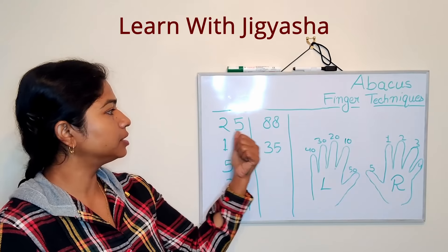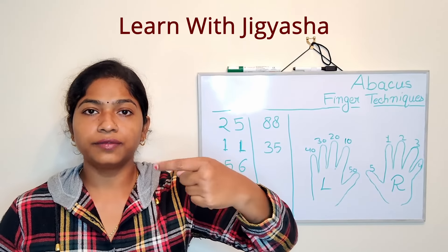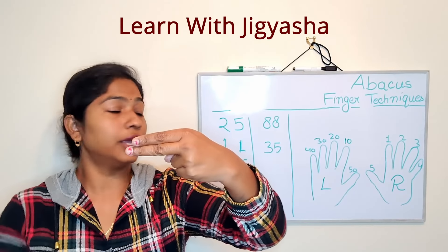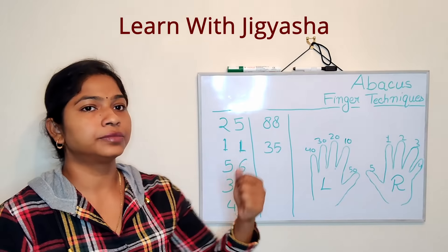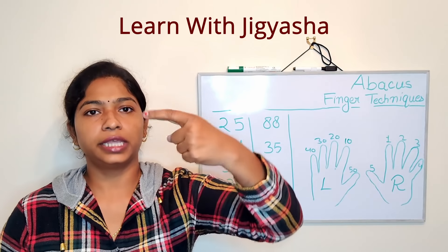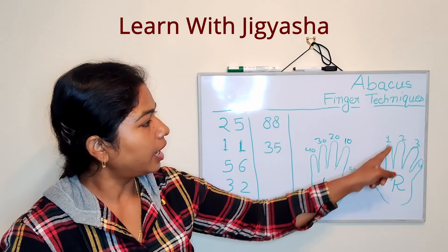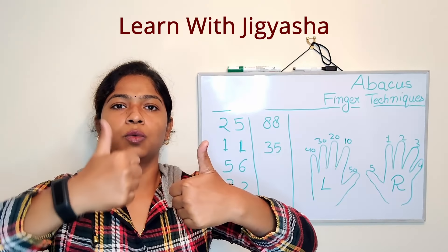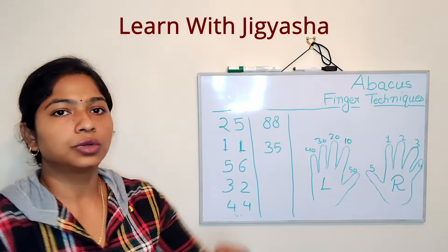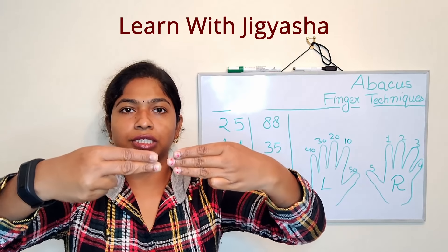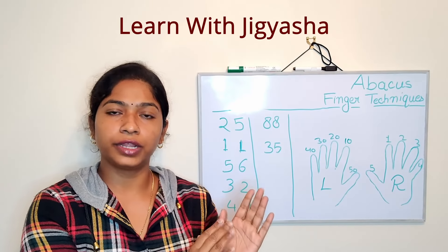Let's represent these numbers on our hands. First: 25 — 20 goes on the left hand and 5 goes on the right hand, so this is 25. Next: 11 — that is 10 plus 1, so 10 on the left hand and 1 on the right hand, giving 11. Next: 56 — that is 50 and 6, so 50 on the left and 6 on the right, giving 56. Next: 32 — that is 30 and 2, so 30 on the left and 2 on the right, giving 32.